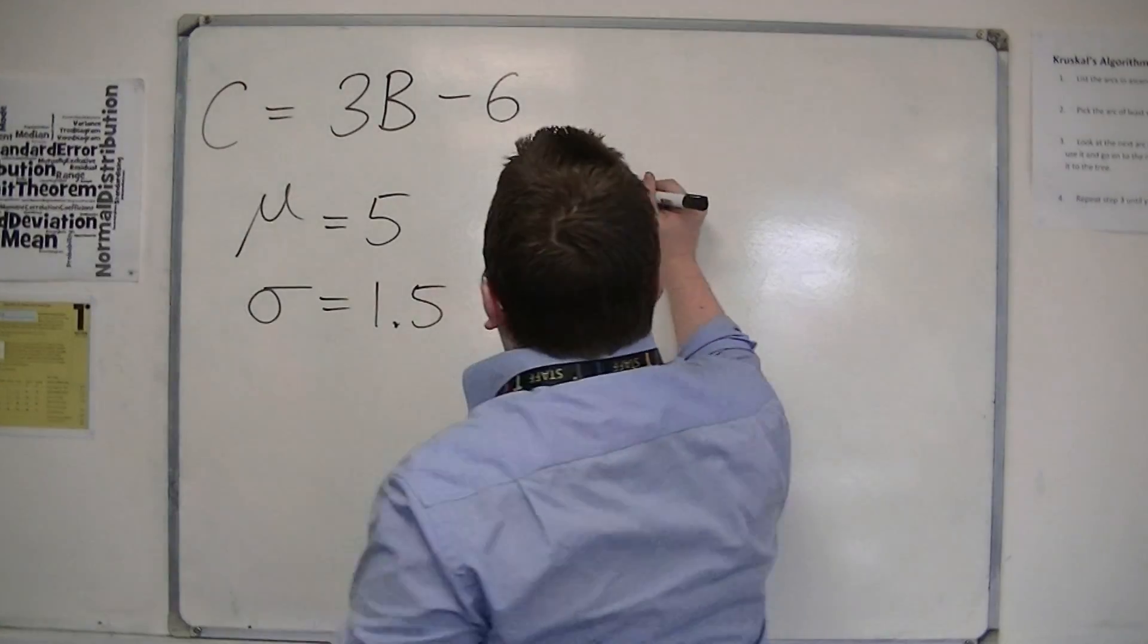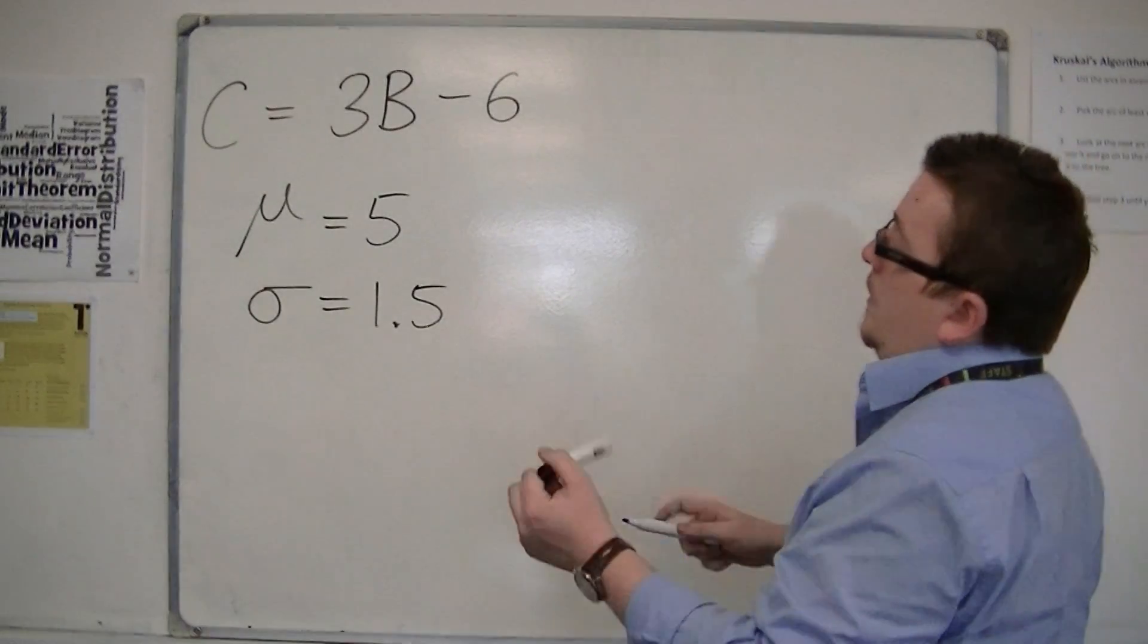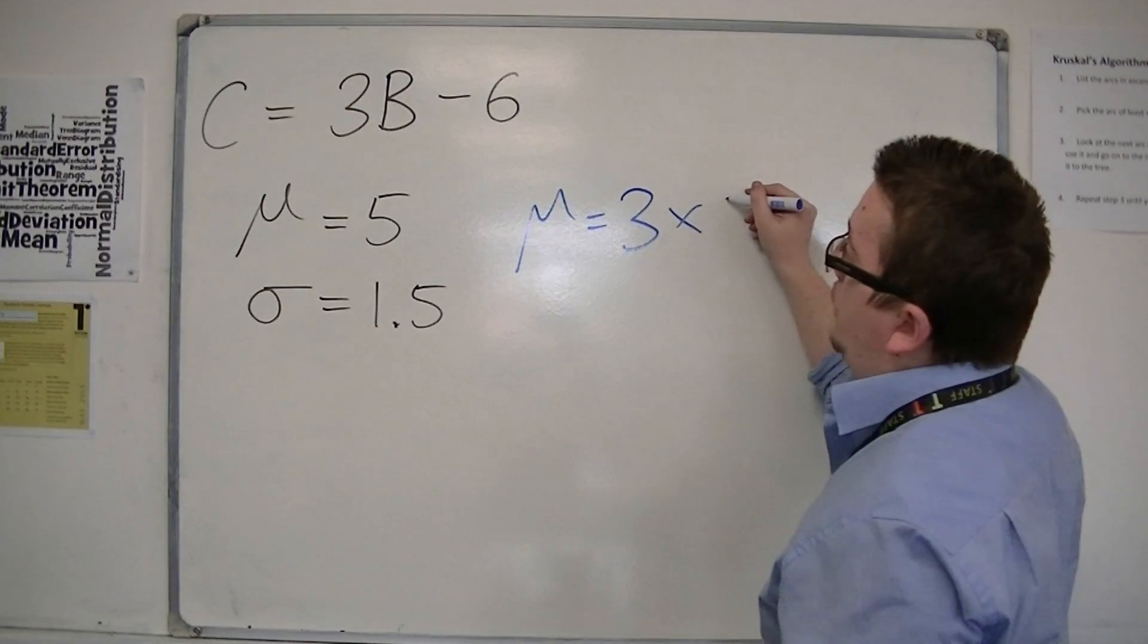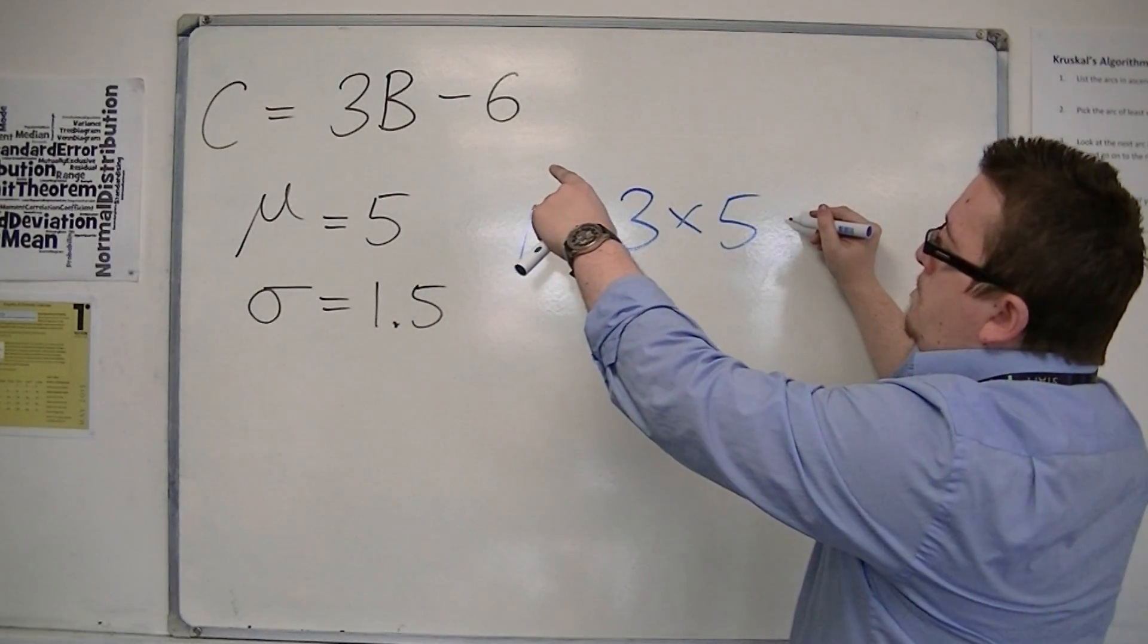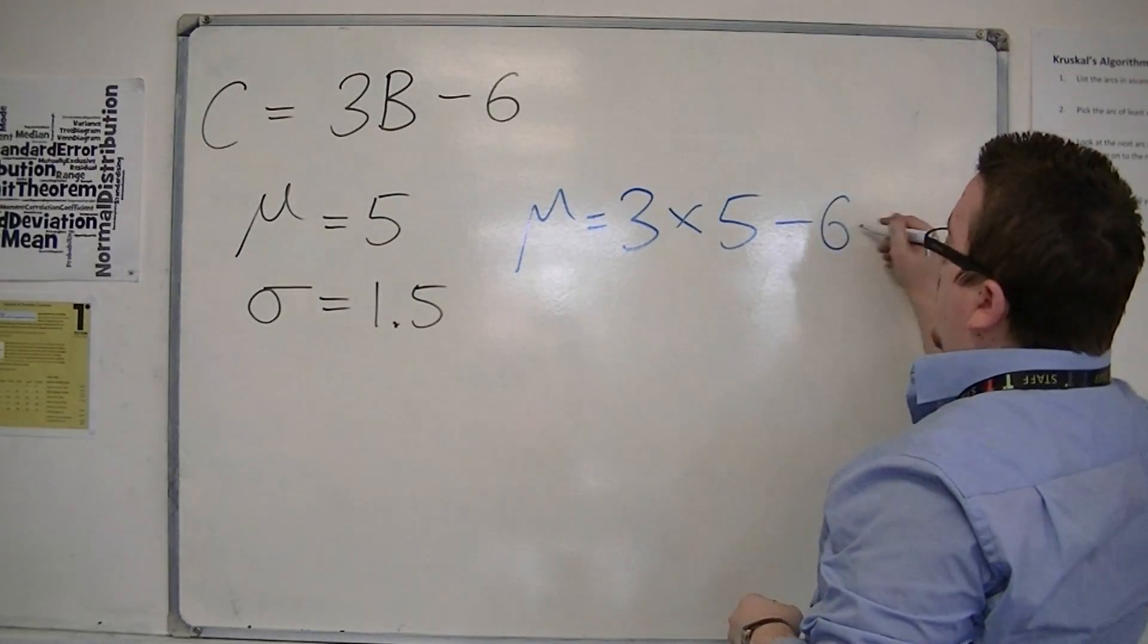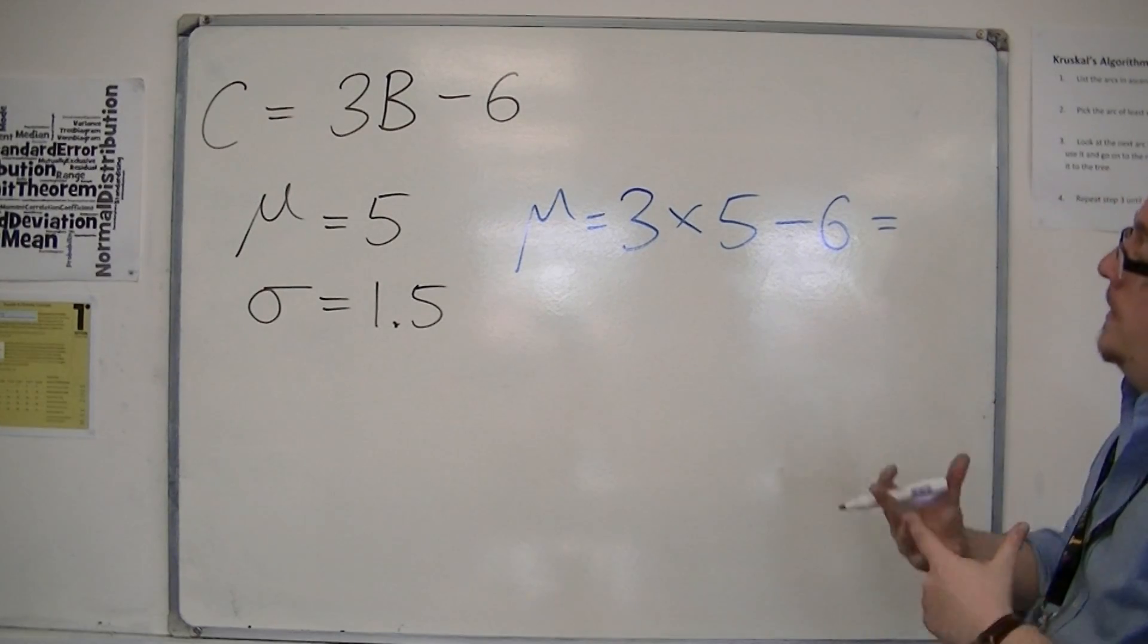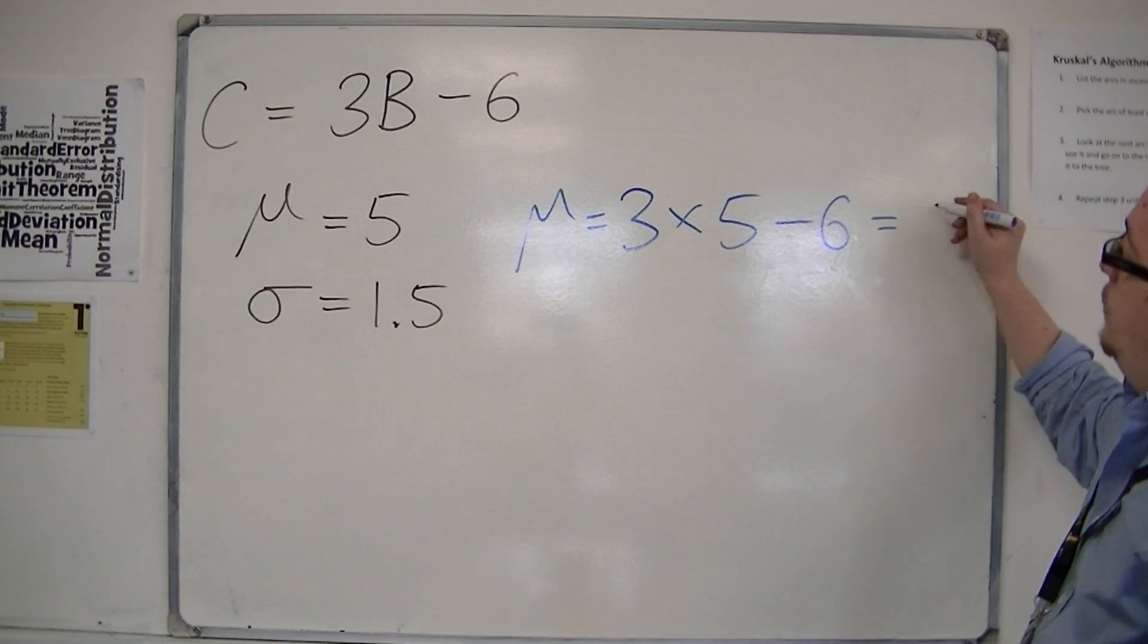Then what's going to happen is that the new mean will be multiplied by three. The new mean will be the old mean multiplied by three and take away six. So both affect it, the multiplication and the subtraction. So we've got fifteen, take away six would be nine.